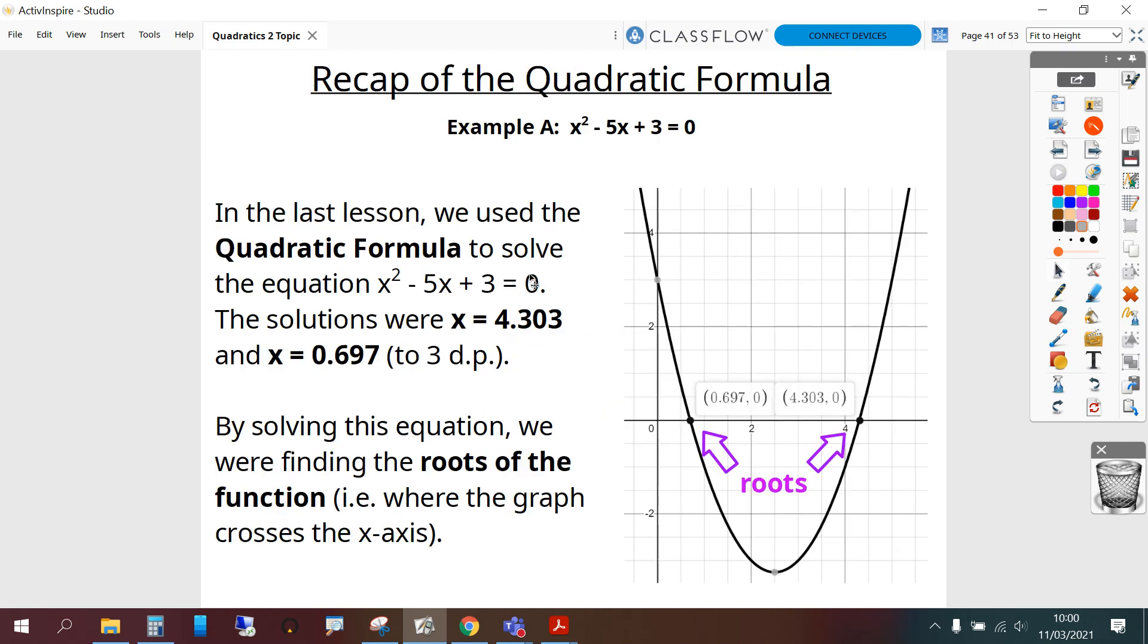In the last lesson we used the quadratic formula to solve the equation x squared minus 5x plus 3 equals 0 and the solutions were x equals 4.303 and x equals 0.697 to 3 decimal places. By solving this equation we were finding the roots of the function, i.e. where the graph crosses the x-axis, and we can see it here and here.